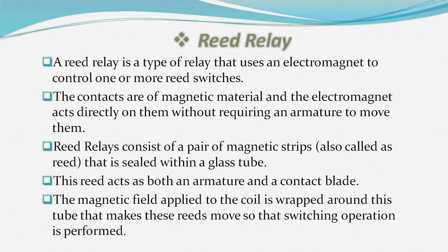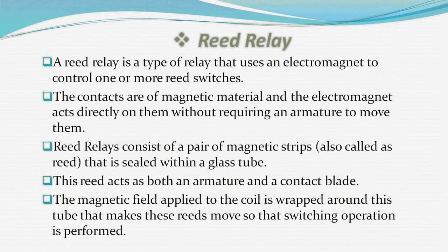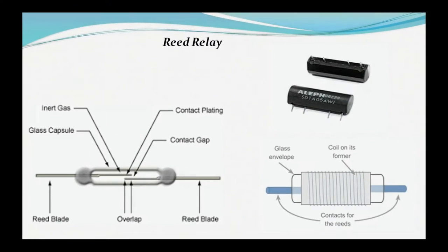Reed relays consist of a pair of magnetic strips — also called reeds — that are sealed within a glass tube. This reed acts as both an armature and a contact blade. The magnetic field applied by the coil wrapped around this tube makes the reeds move so that the switching operation is performed.